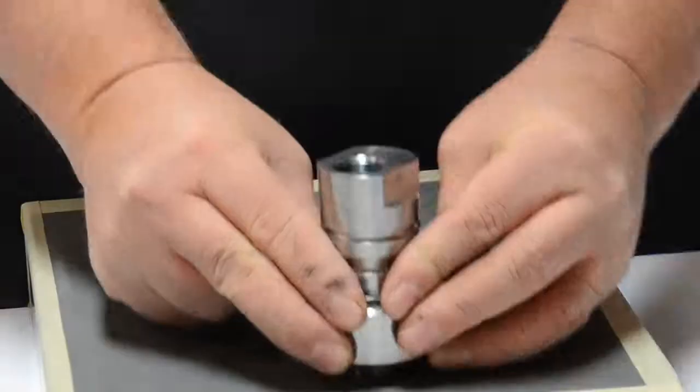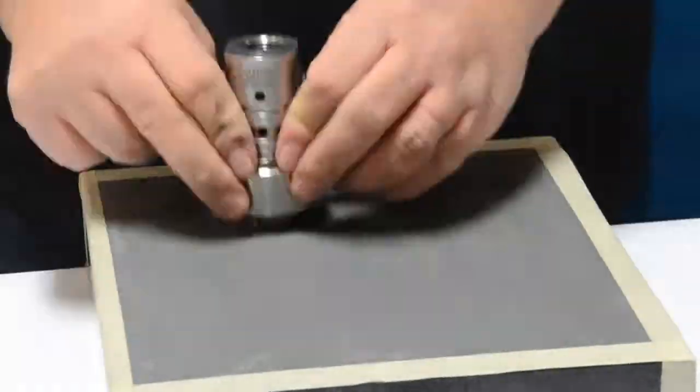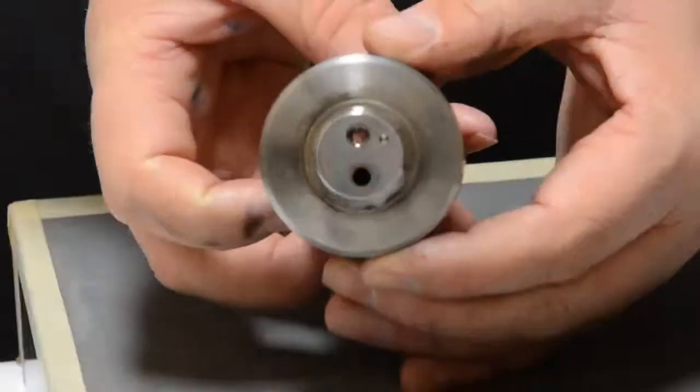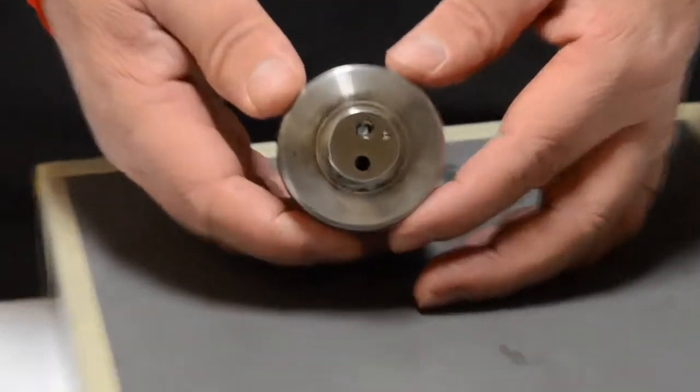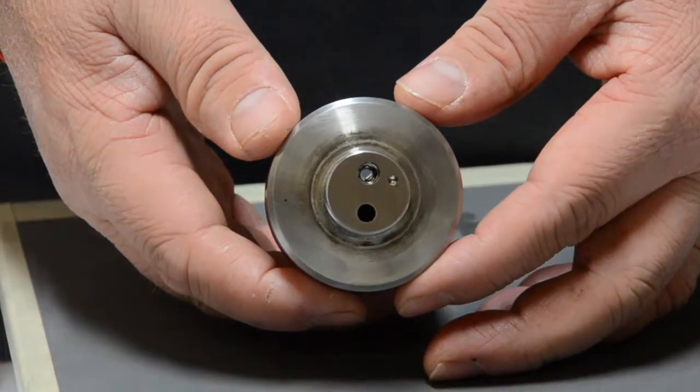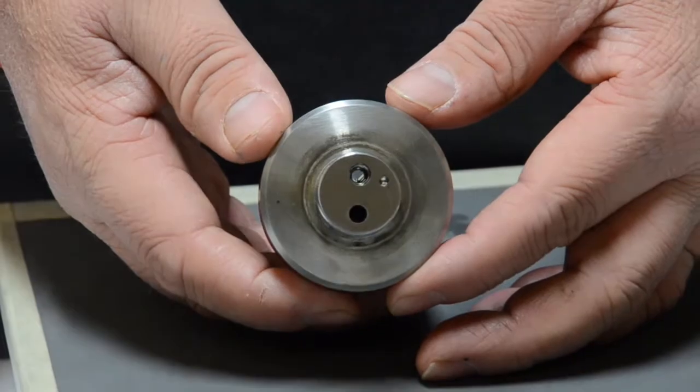We've got to continue to lap. Lapping can actually take quite a few minutes, so we're going to speed up the video here. At the very end, what you're going to look for is a perfectly mirror finish with absolutely no marks from the low pressure poppet. Once you've achieved that, clean off the check valve face and we're ready for reassembly.